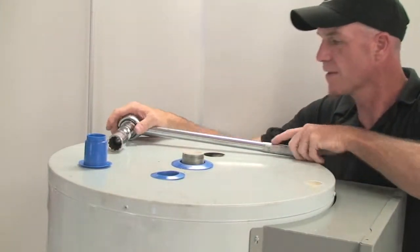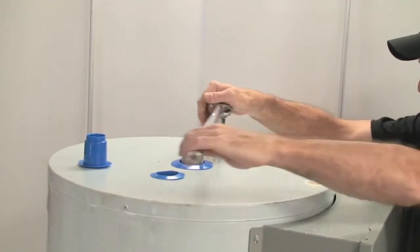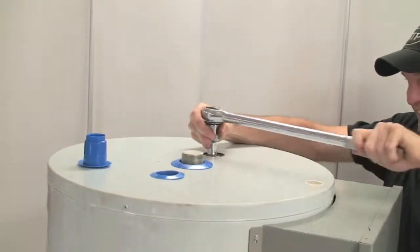First remove plastic escutcheon from mounting location. Using a 1 3/16 inch deep socket remove anode.